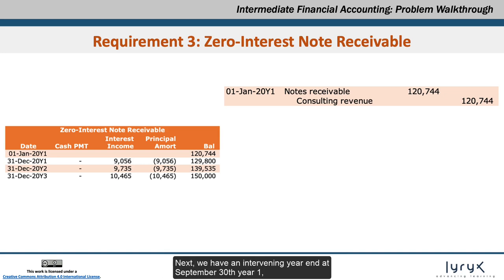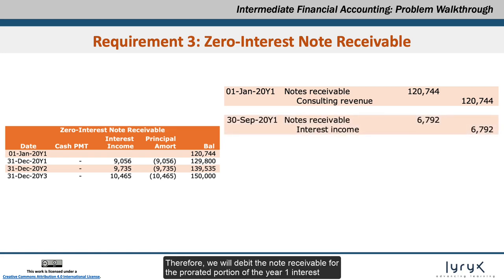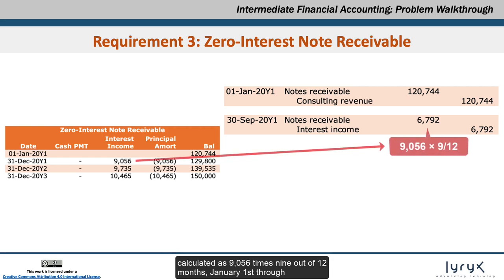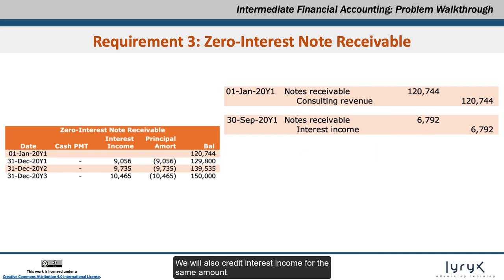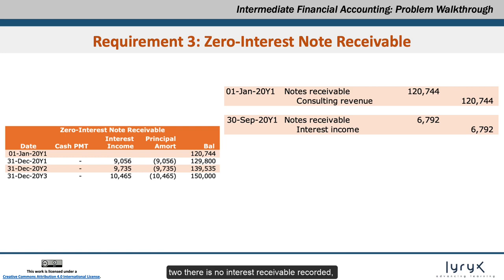Next, we have an intervening year end at September 30, Year 1, where we must record the principal amortization of the note. We will debit the note receivable for the prorated portion of the Year 1 interest, calculated as $9,056 times 9 out of 12 months — January 1 through September 30 inclusive — which results in interest of $6,792. We will also credit interest income for the same amount. Note that in contrast to the blended payment and interest-only notes in requirements 1 and 2, there is no interest receivable recorded — only interest income, which is directly amortized against the note receivable balance.